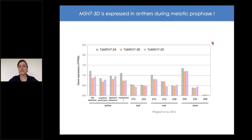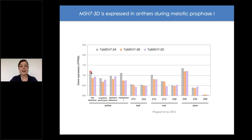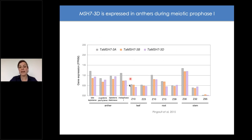Regarding expression of MSH7-3D during meiosis, we analyzed RNA abundance in anthers at late leptotene, zygotene, pachytene, diplotene/diakinesis, and metaphase I. MSH7-3D is expressed at all these stages, consistent with its role early in meiosis in suppressing homeologous recombination. The other homeologous copies — 3A and 3B — were also highly expressed at these stages, and all three copies were expressed in somatic tissues including leaf, roots, and stem, consistent with their critical role in genome maintenance.